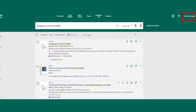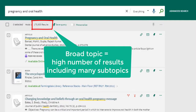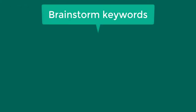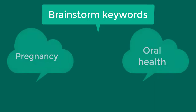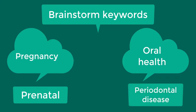Notice the amount of search results at the top. If you search a broad topic, you're going to get a high number of results that span many topics. Instead, you should brainstorm different keywords for a specific topic. In our example, the keywords we're going to start with are pregnancy and oral health. You should also brainstorm other keywords before and during your search — for example, prenatal in addition to pregnancy.